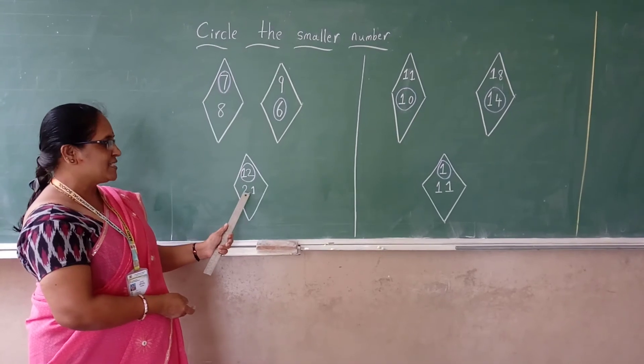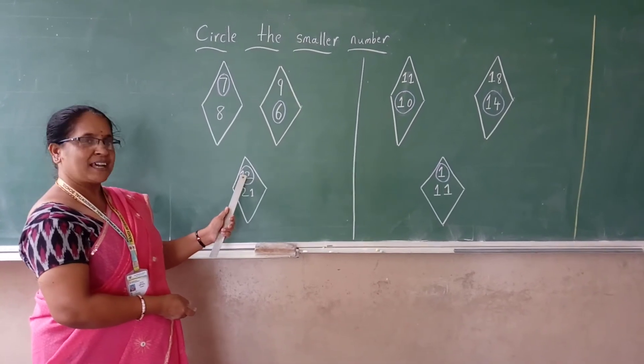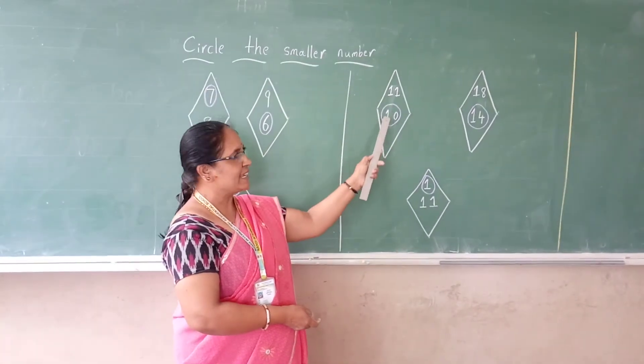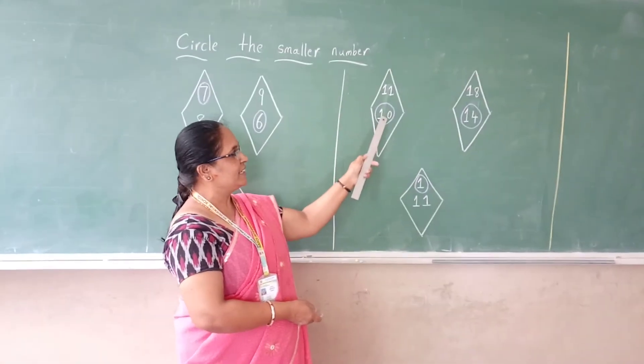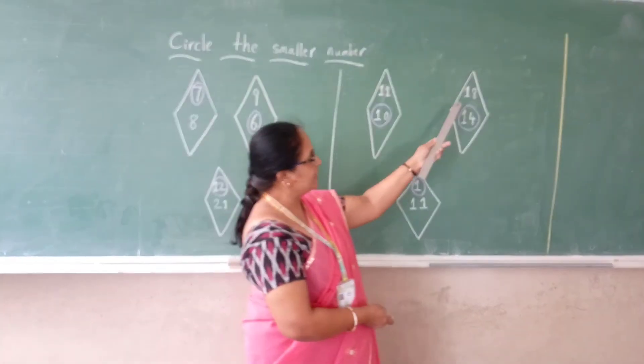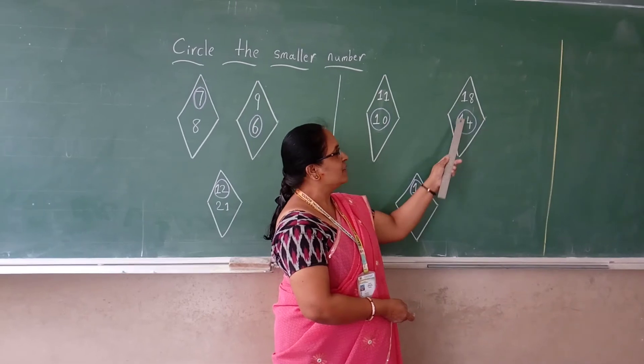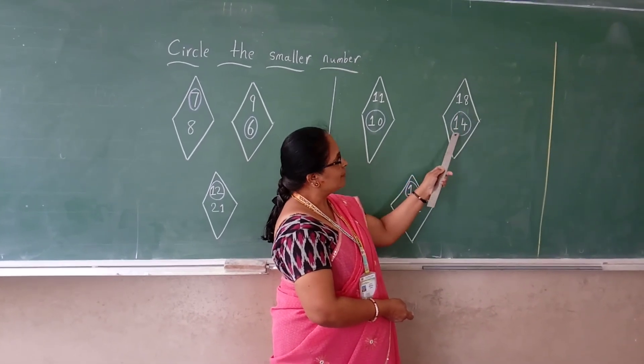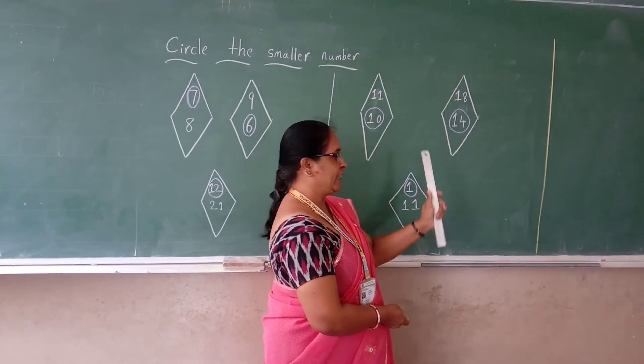12 and 21 is there. Before 21, 12 is coming, that of course is the smaller number. 11 and 10 is there. Then, before 11, 10 is coming, that of course is the smaller number. Then, 18 and 14 is there. Which one is the smaller number? 14. All of you make a circle for 14.